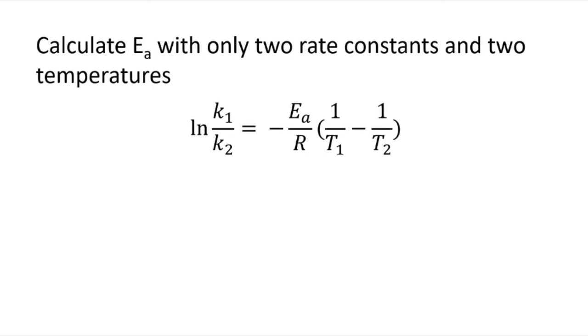So let's do an example. Let's calculate the energy of activation from only two rate constants and two temperatures. That means we're going to want this form of the equation. For 132 purposes, this is the most useful form of the Arrhenius equation.